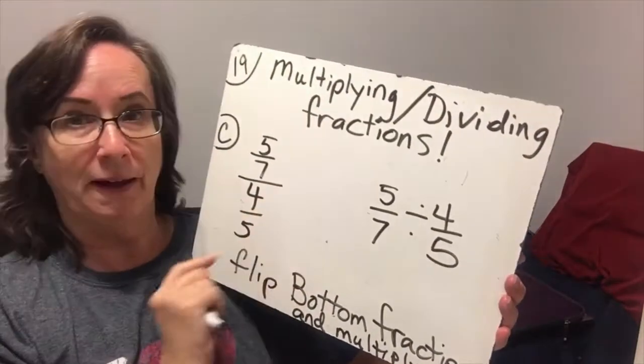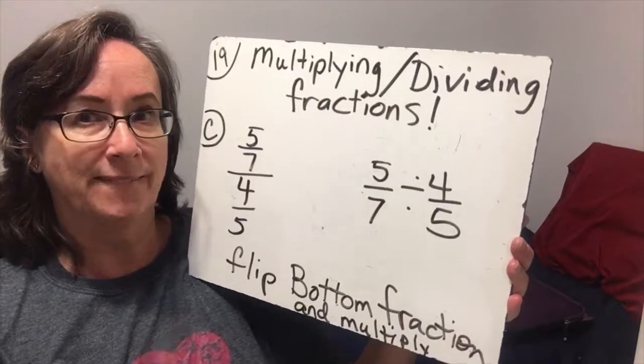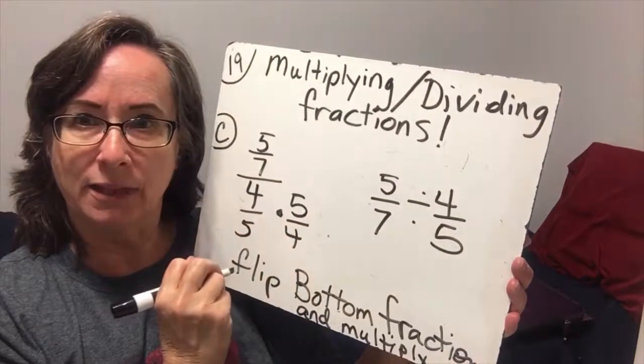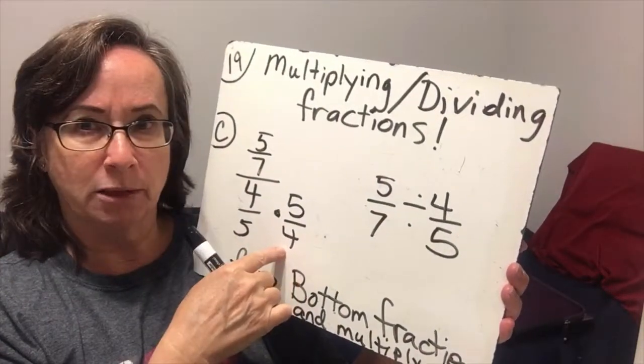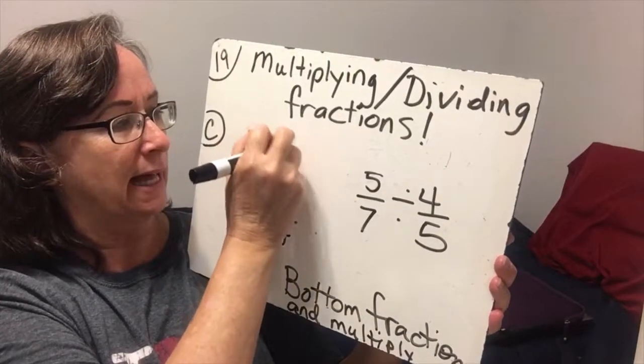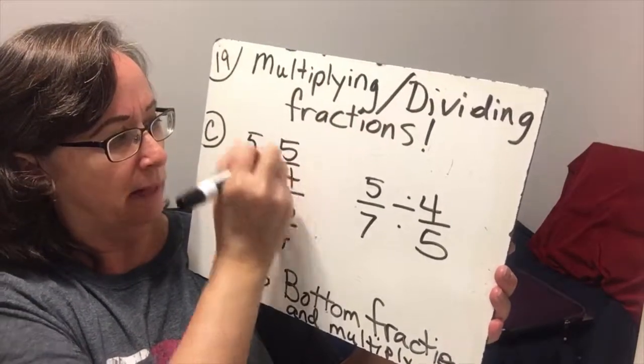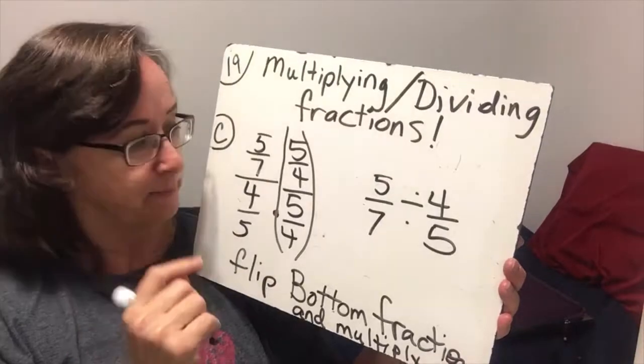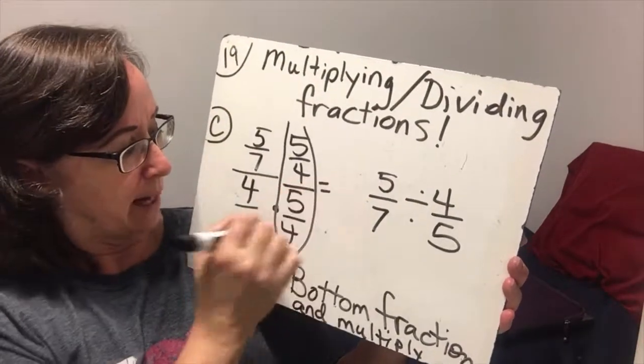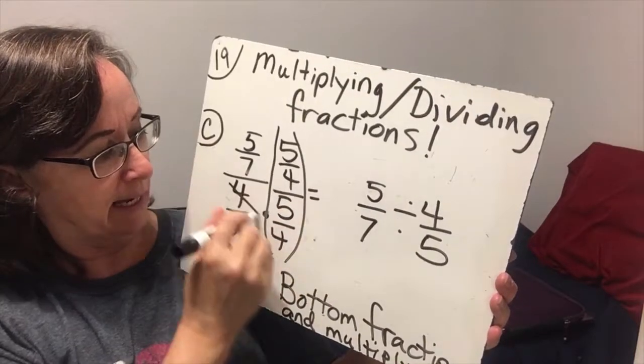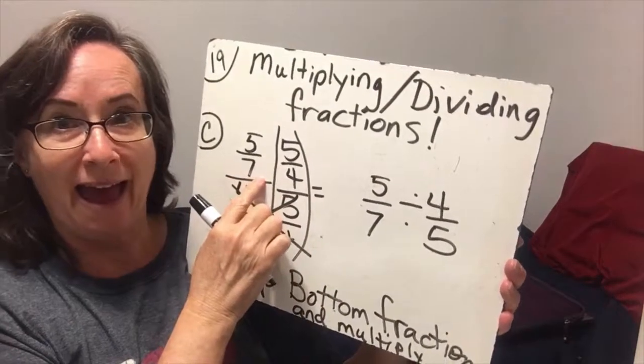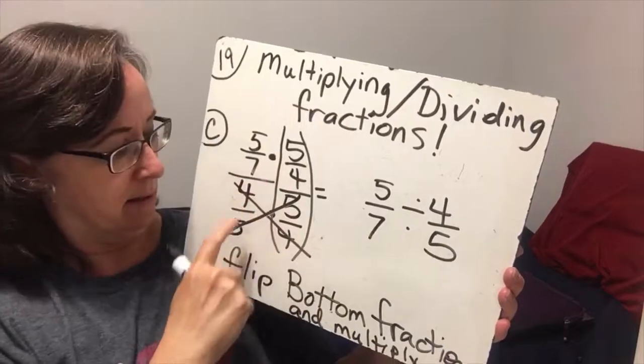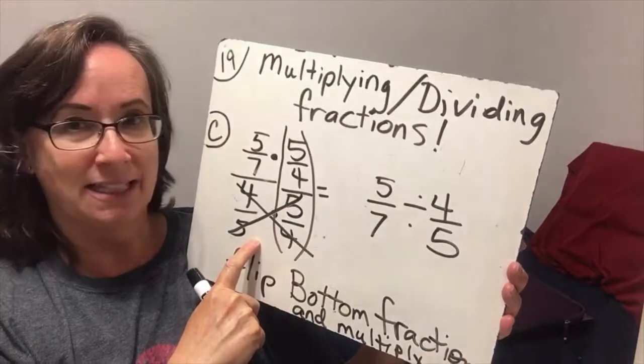5 fourths, then wouldn't I get rid of the denominator altogether? But I cannot multiply the denominator by 5 fourths, unless I also multiply the numerator by 5 fourths, because 5 fourths divided by 5 fourths is 1. So now, my 4 fifths times the 5 fourths cancels out.